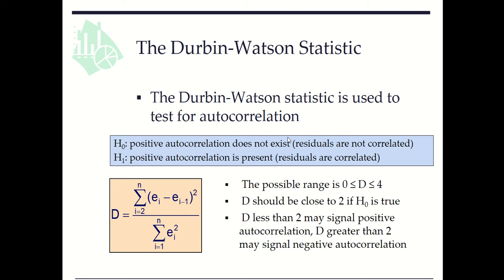The Durbin-Watson statistic is used to test for autocorrelation. For H₀, the null hypothesis, positive autocorrelation does not exist or residuals are not correlated. For H₁, positive autocorrelation is present or residuals are correlated.